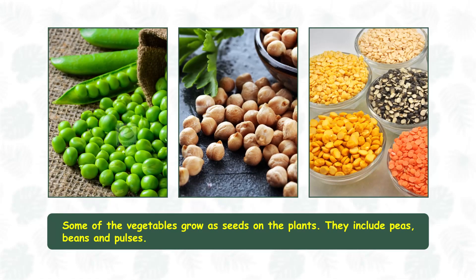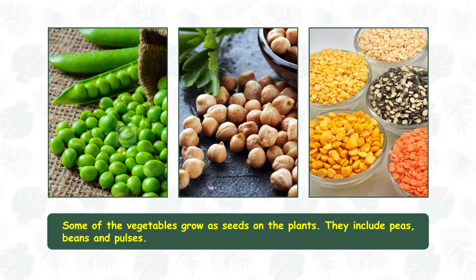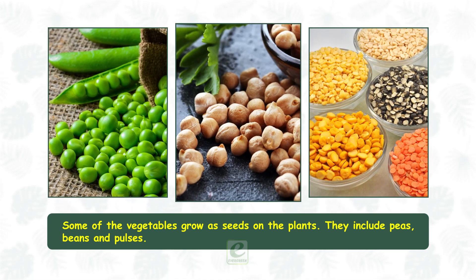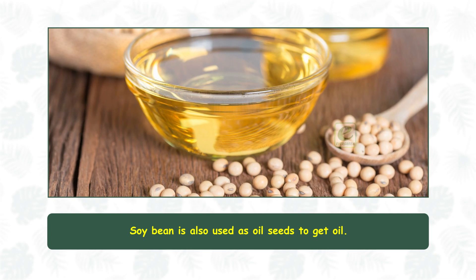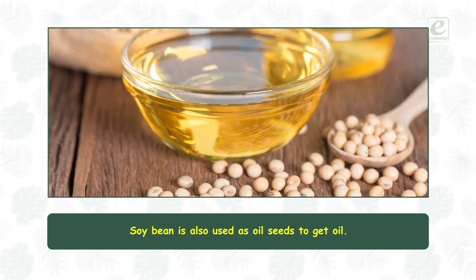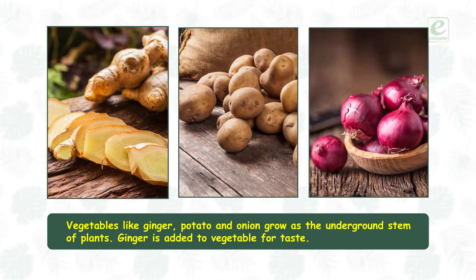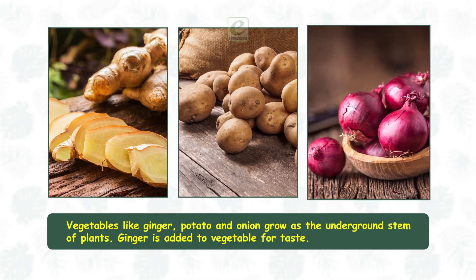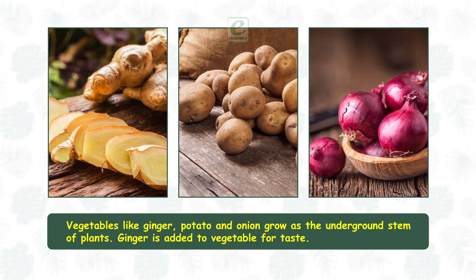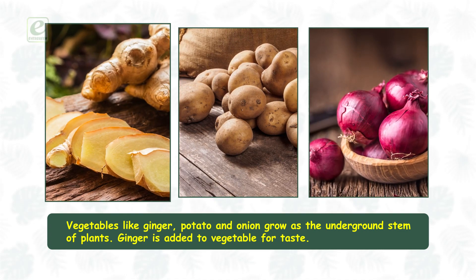Some of the vegetables grow as seeds on the plants. They include peas, beans, and pulses. Soya bean is also used as oil seeds to get oil. Vegetables like ginger, potato, and onion grow as the underground stem of plants. Ginger is added to vegetables for taste.